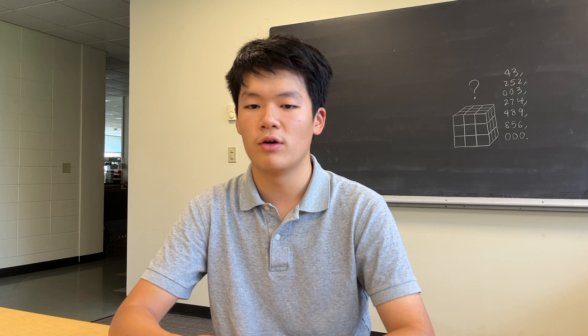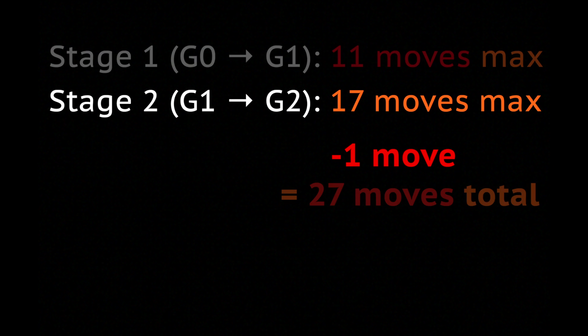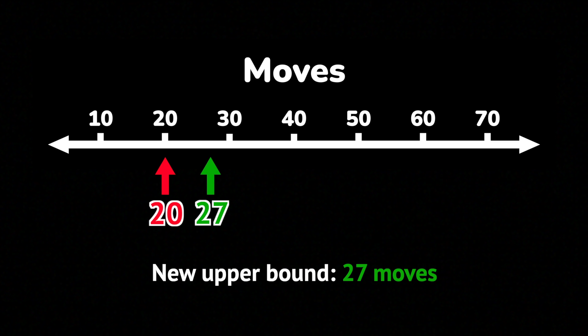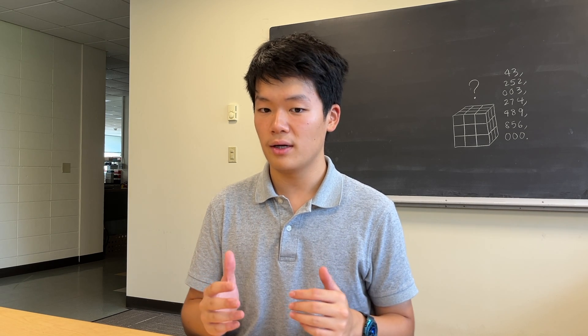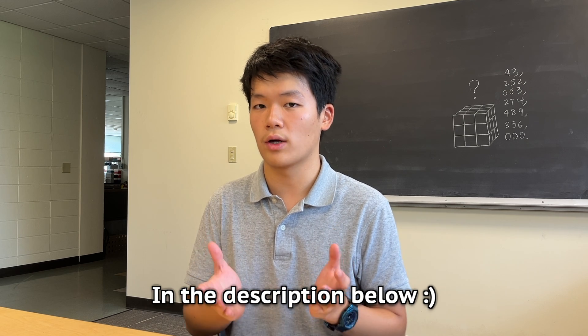A year later, Radu reduced the number of moves required for stage 1 of Kociemba's algorithm from 12 down to 11 moves, creating a new upper bound of 27 moves. His calculations were complicated, so I'm going to leave them out of this video, but of course, you can find the link to his work in the description.